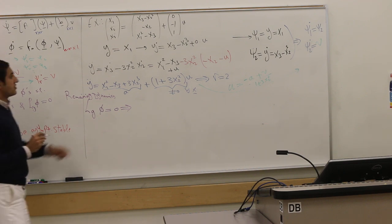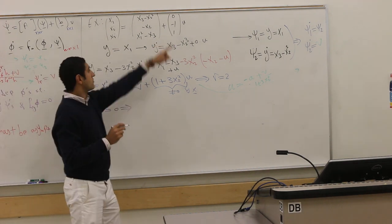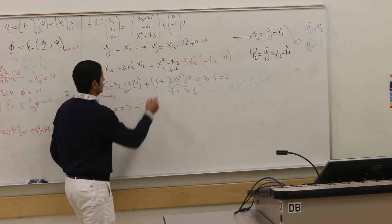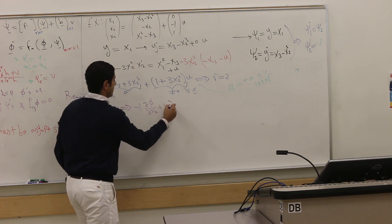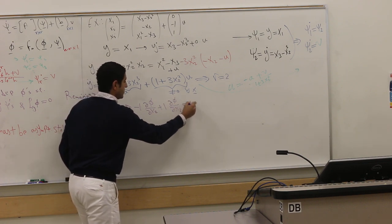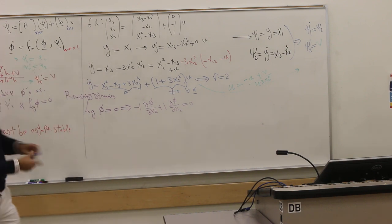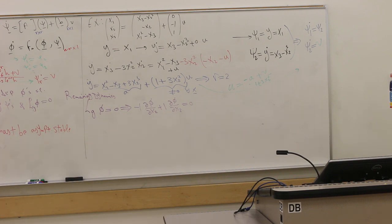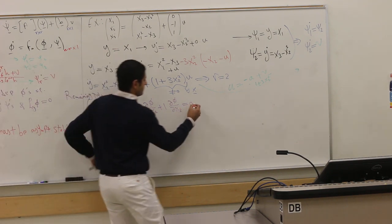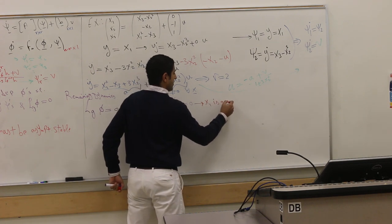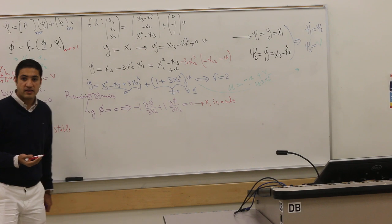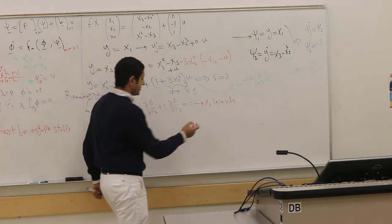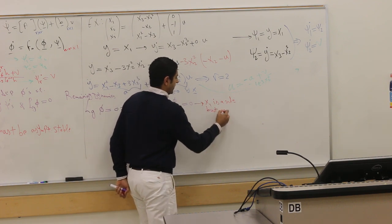φ that is independent of ψ's and L_g φ is zero. This is the remaining dynamics. L_g φ is zero. This is the g. I multiply zero ∂φ/∂x₁, negative one ∂φ/∂x₂, plus one ∂φ/∂x₃ equals zero. What is an obvious solution here for φ? φ is a function of x₁, x₂, x₃. x₁ is a solution, but we will not take it. Why? Because it's one of the ψ's. It has to be independent of the ψ's.